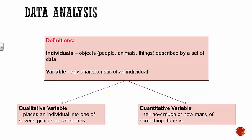In our data analysis we have individuals — the objects we're describing or finding information about, like people, animals, or things. Then we have a variable, which is a characteristic of the individual — it could be gender, ethnicity, how many shoes you have, your age. We have two types of variables: qualitative variables and quantitative variables.